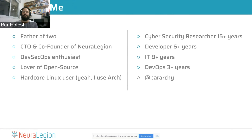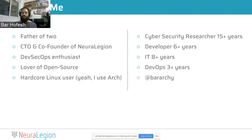A bit about me: I'm a father of two, the CTO and co-founder of Neurolegion. I'm a DevSecOps enthusiast and I love open source. About the McGinn application — amazing, the moment I saw it was open source, I was really proud being an Israeli and having the government create such an amazing app and pushing it to GitHub with MIT license. I'm a hardcore Linux user and I use Arch. I've been doing cybersecurity research for something like 15 years, basically breaking stuff over IRC. I've been a developer for a bit more than six years, played around in IT for eight years and played around with DevOps. You can follow me on Twitter at Baraki.